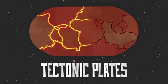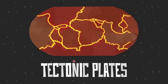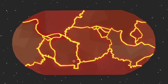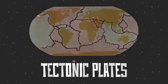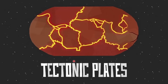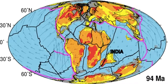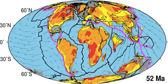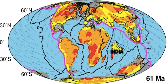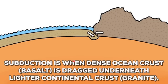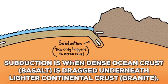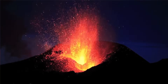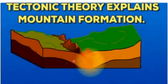Plate tectonics is a theory that explains the surface of the earth is broken into large and small lithospheric plates that are moving constantly and slowly. The size and position of these plates change as years pass by. They move against each other at their edges, causing intense geologic activity such as earthquakes, volcanism, and mountain building.